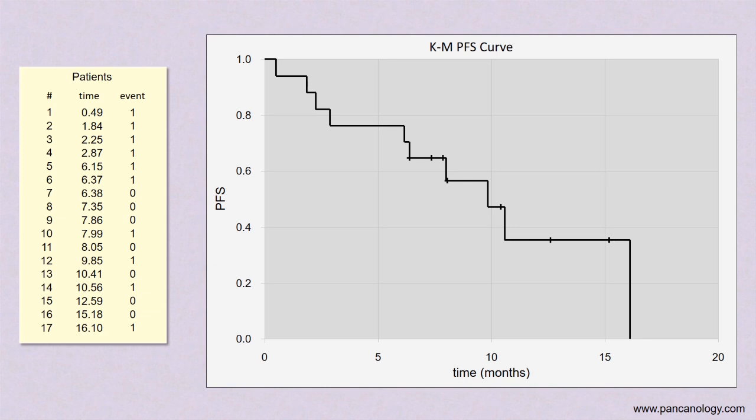Here we have the final progression-free survival curve. It's our best estimate of the trial results. And here we can see the effects of all 17 patients on the graph. There are vertical drops for each patient event and plus marks for each censored patient. Everyone is shown here.